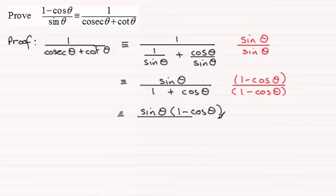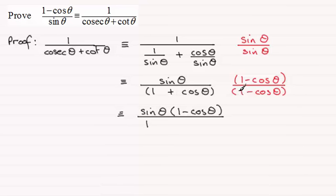Looking at the denominator, what I've got is essentially the difference of two squares: (1 plus cos theta)(1 minus cos theta). Expanding this gives 1 times 1 which is 1, then 1 times minus cosine theta which is minus cosine theta, then plus cosine theta times 1 which is plus cosine theta — those cancel — and finally cosine theta times minus cosine theta which is minus cosine squared theta. So the denominator becomes 1 minus cosine squared theta.